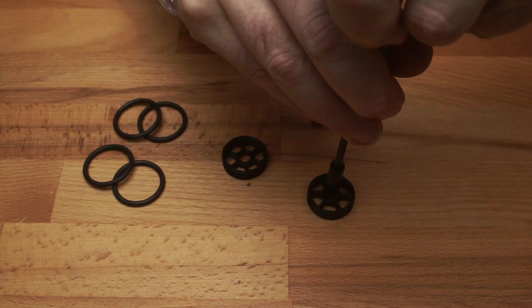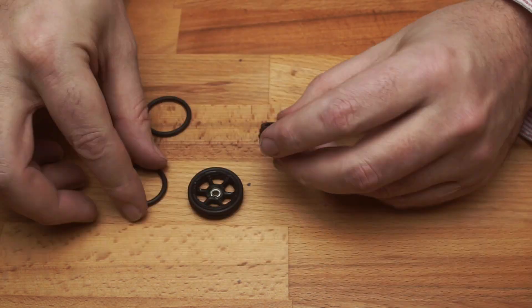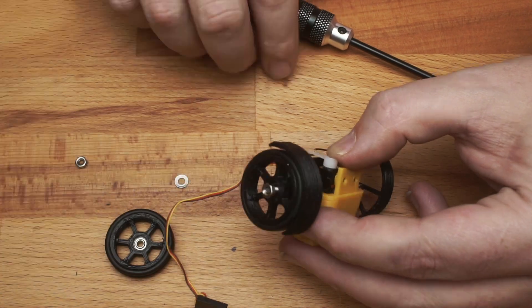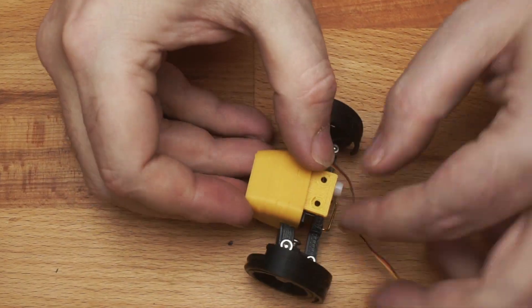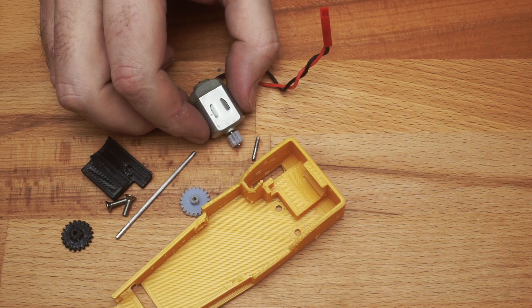The wheels have a bearing snapped into their centre and O-rings are added as tires. Finally we can secure the wheels. Well that's the complicated part done so let's move on to the fun bits.